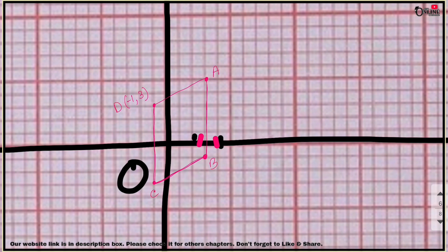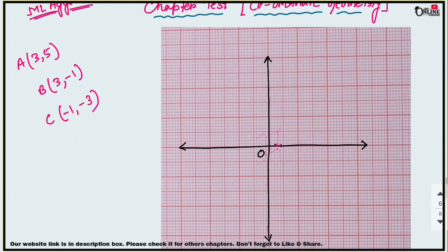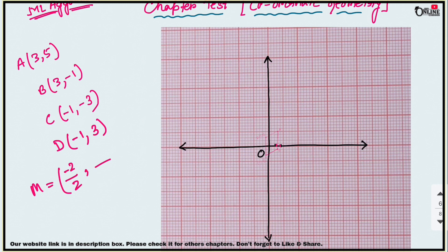So the coordinate of the fourth vertex D is (-1, 3). This completes the parallelogram ABCD. Now find the midpoint of CD. C is (-1, -3) and D is (-1, 3). Midpoint = ((-1+(-1))/2, (-3+3)/2) = (-2/2, 0/2) = (-1, 0). So (-1, 0) is the midpoint of CD.